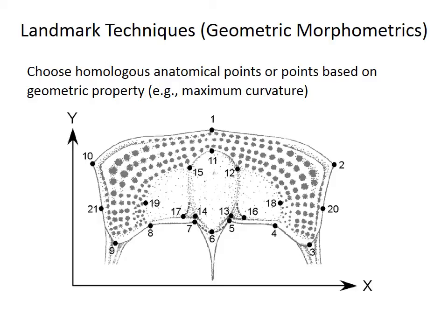For example, the front of a trilobite glabella — point 11 — or the genal spine — point 9 — are homologous features. Points can also be chosen to reflect geometric features, like positions of maximum curvature, but that is less ideal than using homologous feature landmarks.